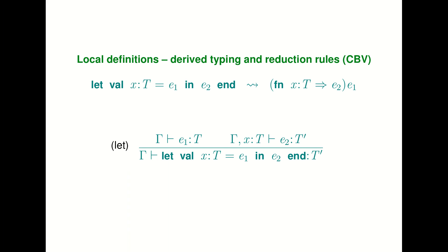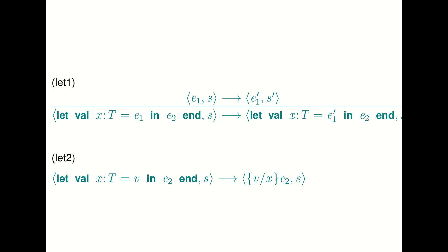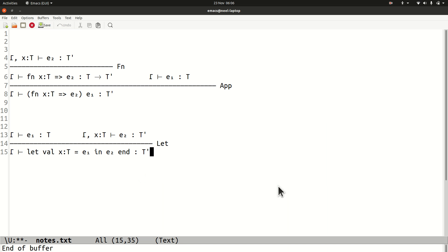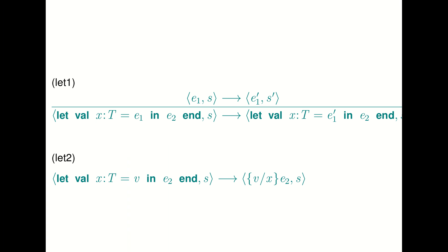The operational semantics for let bindings works the same way. The two rules say: first, if you see let x = e1 in e2 and e1 reduces to e1', then let x = e1 in e2 reduces to let x = e1' in e2 — we evaluate the thing we're binding first. Once it's a value, if you see let x = v in e2, we do the substitution. Both of these rules can be derived from the operational semantics rules for applications.